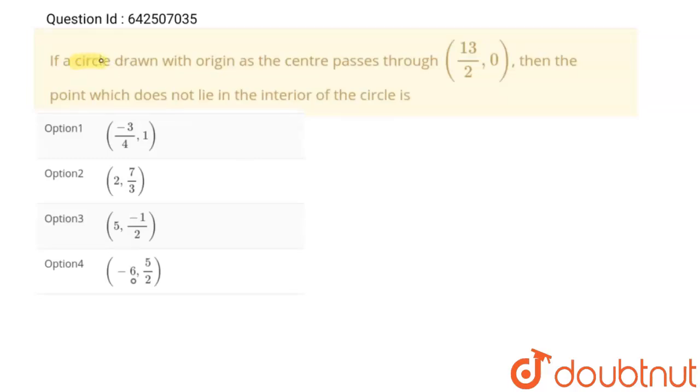If a circle drawn with origin as the center passes through the point (13/2, 0), then find the point which does not lie in the interior of the circle. There are four options, and we have to find which of the following points among these four options does not lie in the interior of this circle. So let's find it out.